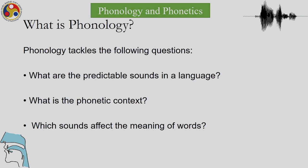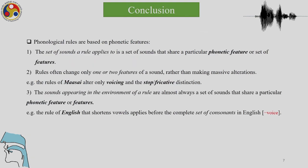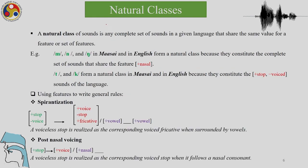Phonology tackles questions such as: what are predictable sounds in the language, what exactly do we mean by predictability, what is the phonetic context, and which sounds affect the meaning of words. We have also been talking about phonemic analysis, whose goal is to produce a minimal set of phonemes for the language — the smallest set of sounds with which every utterance can be analyzed phonetically. We also looked at phonological rules in the last lecture.